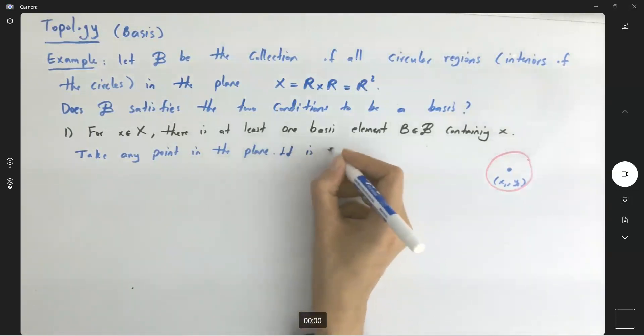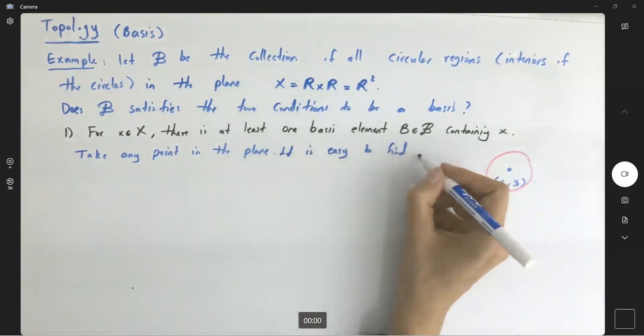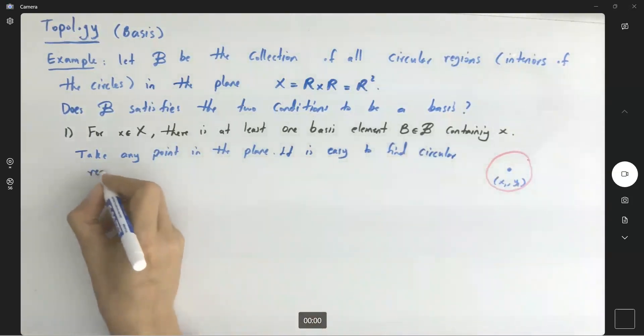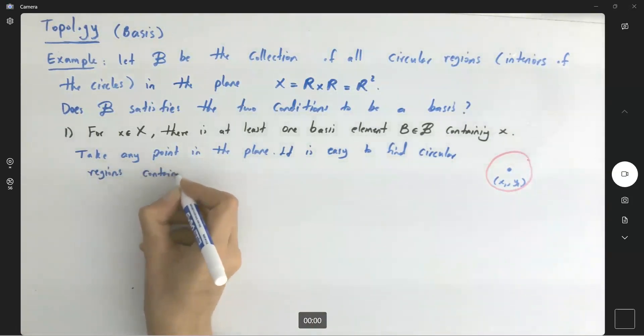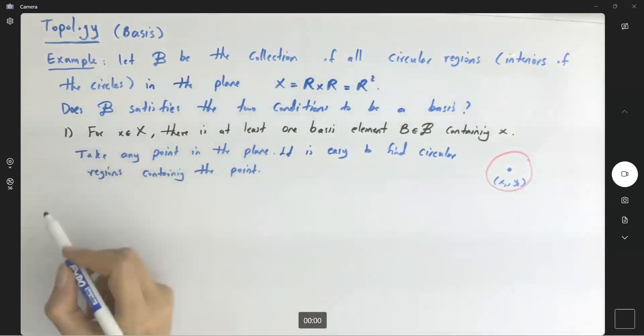So it is easy to find circular regions containing the point. So the very first condition is met.